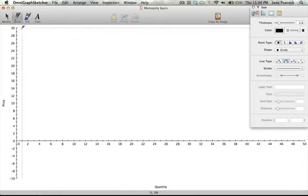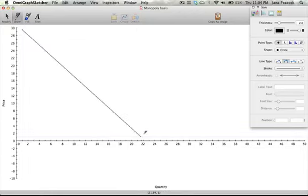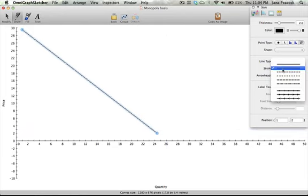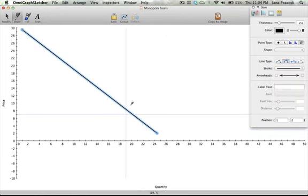Alright, let's take a look at government regulation in a monopoly. Here is a market demand curve for, let's say, electricity because that is often government regulated.